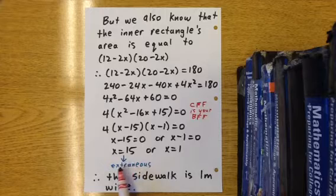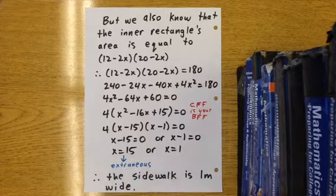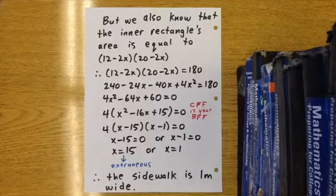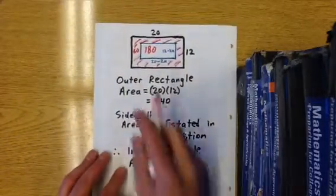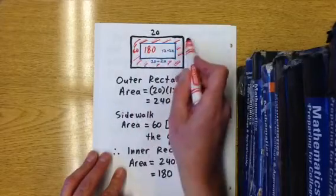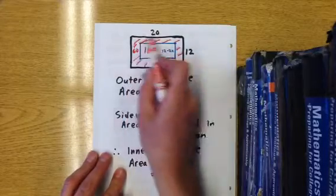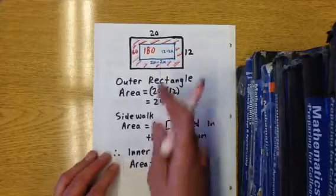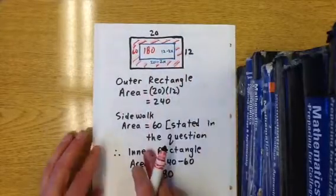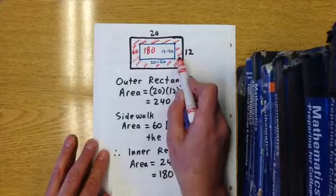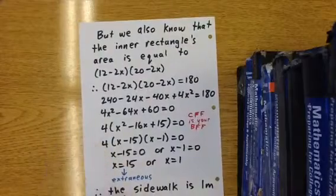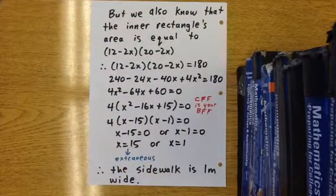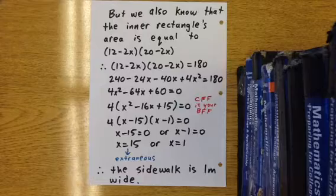This is an extraneous solution. The reason it's extraneous is you can't chop 15 meters on each side of a lawn when this length is only 12 and this one is only 20. You couldn't cut 15 meters from each side in that rectangle. So it must be that this width that was cut off here was 1 meter. Our final answer is x equals 1 and therefore the sidewalk is 1 meter wide.